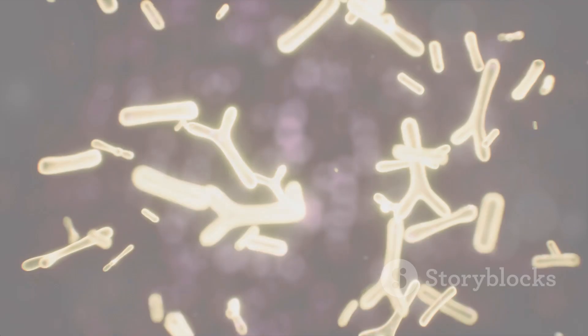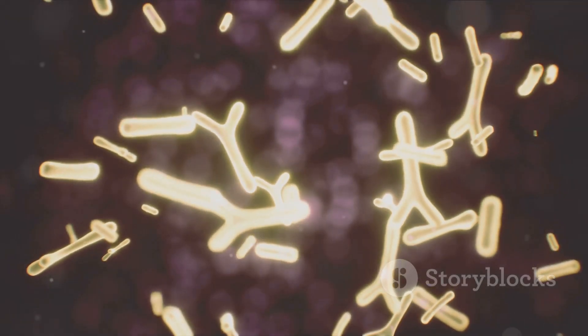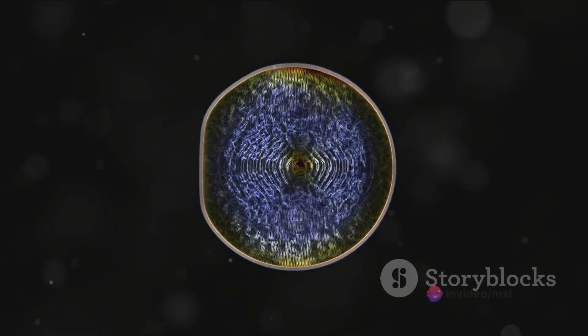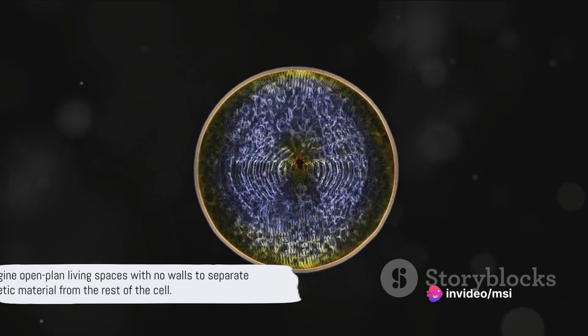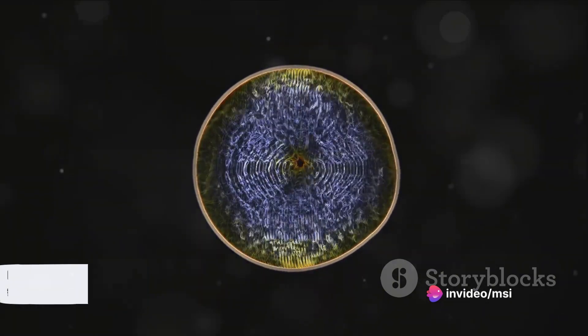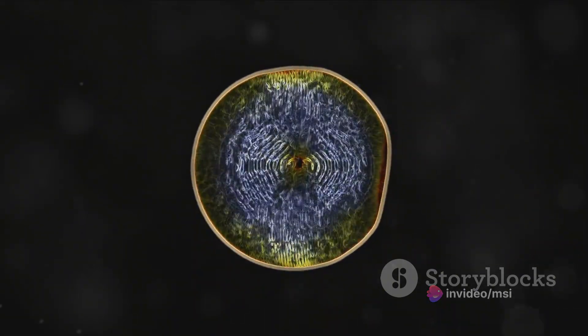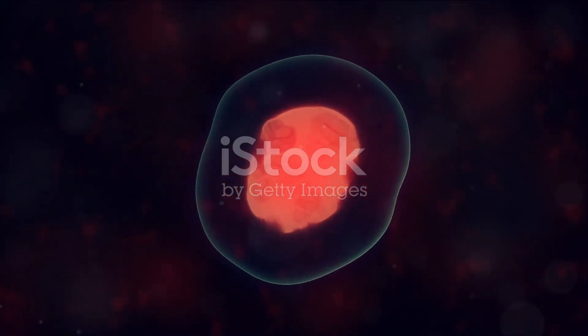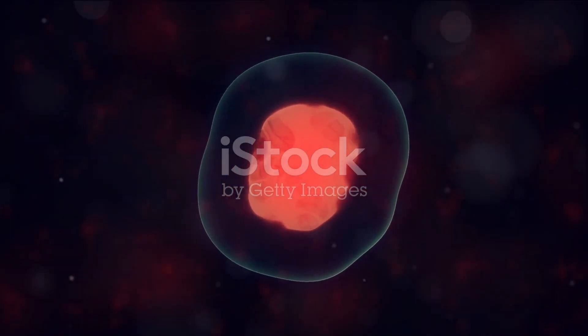Picture a tiny studio apartment, compact and efficient. This is akin to a prokaryotic cell, simpler in structure and generally much smaller than its eukaryotic counterpart. These cells are like open-plan living spaces, with no walls to separate the genetic material from the rest of the cell. The DNA floats freely in the cytoplasm, the jelly-like substance that fills the cell.